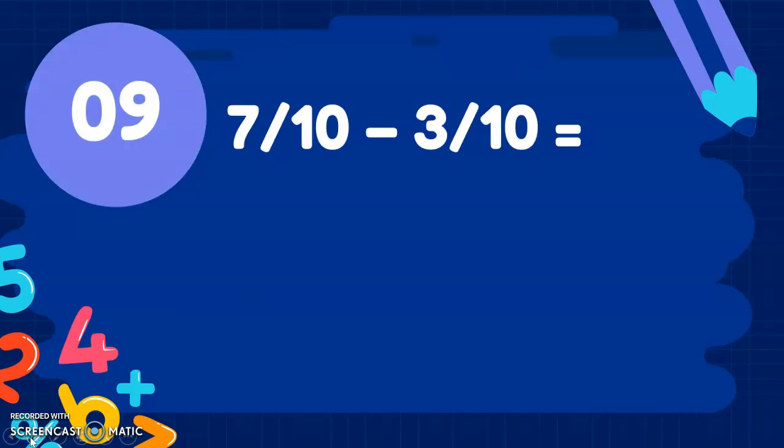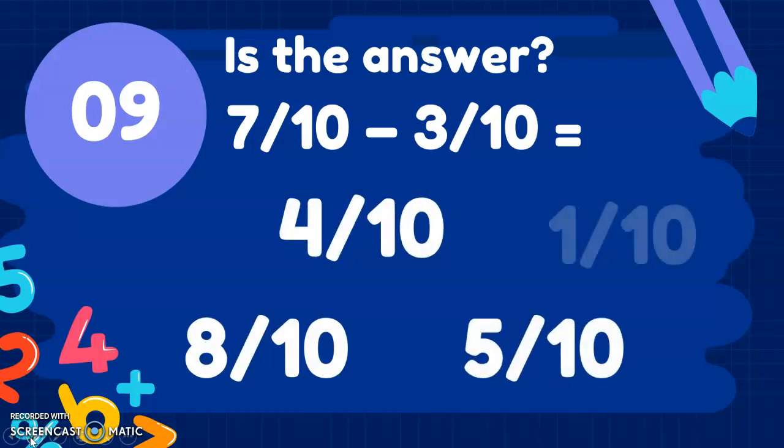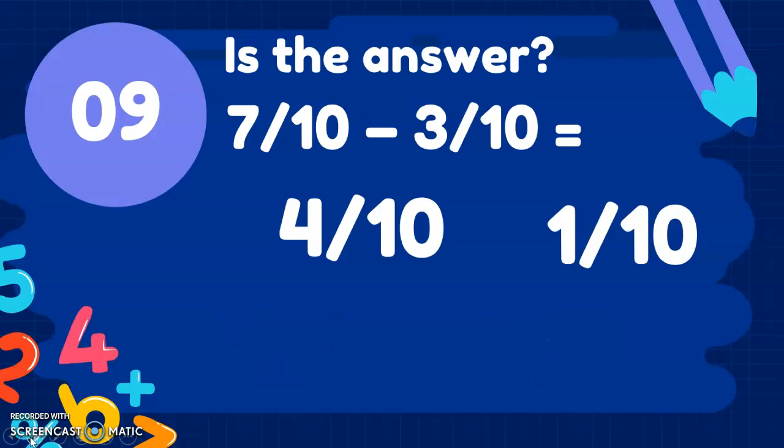Number 9. 7 tenths take away 3 tenths. Is the answer 8 tenths, 4 tenths, 5 tenths or 1 tenths? Bet you get there quicker than me. Not 8 tenths, not 5 tenths and not 1 tenths. It's 4 tenths. We take 7 tenths and take away 3 tenths. 7 take away 3 is 4. We do nothing to the denominator.